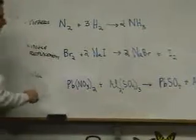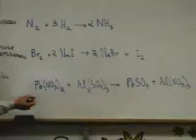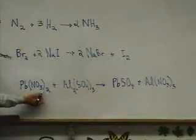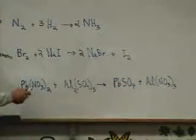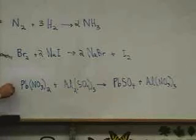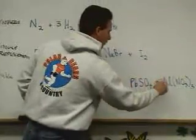So now to balance, first thing I might notice would be that I have two nitrates here, and three on the other side, and many of you learned this trick earlier in the year. To balance a two against a three, we need to go to a lowest common factor of six, so I'm going to need a coefficient of three here to make that happen, and a coefficient of two over here.